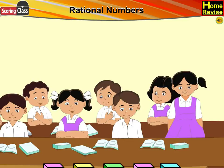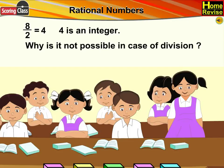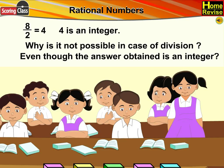Madam, why is it not possible in case of division? Suppose if I take an example, 8 divided by 2 is equal to 4, and 4 is an integer. Then why is it not possible in case of division, even though the answer obtained is an integer?